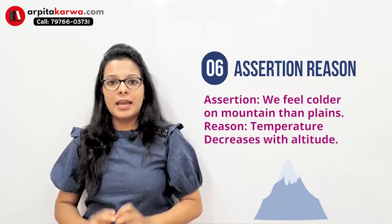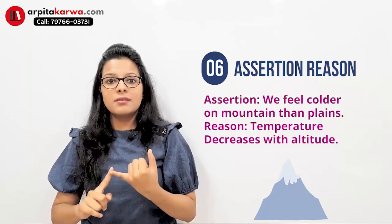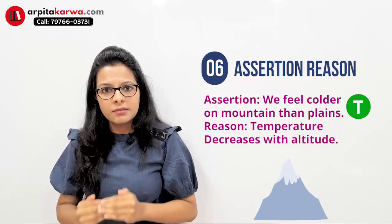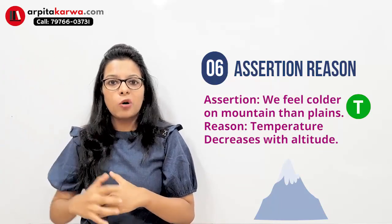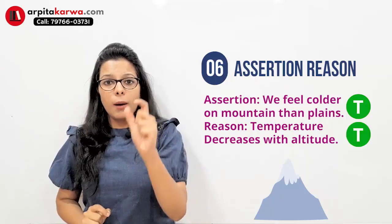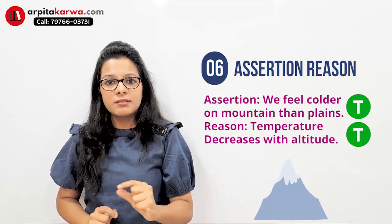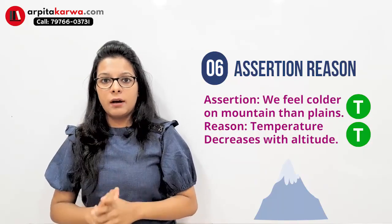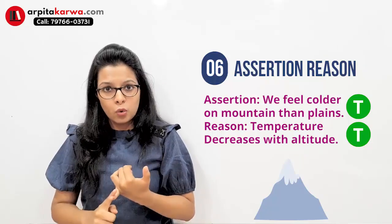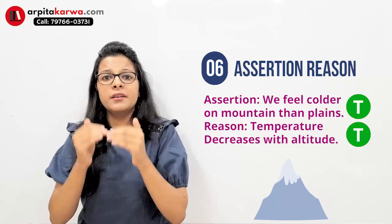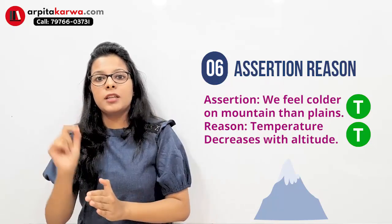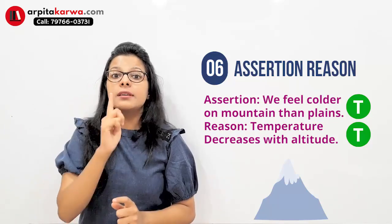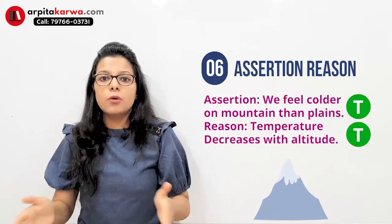To solve assertion-reason questions, first read the assertion statement separately and decide if it is true or false — mark T or F. Then read the reason statement separately and decide if it is true or false. For example, does the temperature decrease when we go to higher altitudes? Yes, it definitely does — so the reason statement is also true. In the first step, you evaluate each statement independently to determine whether they are correct or not.